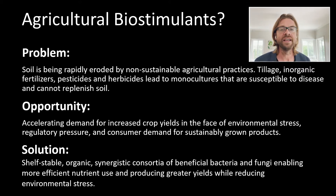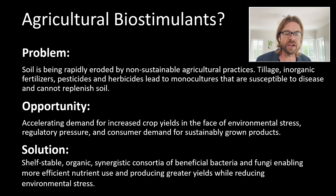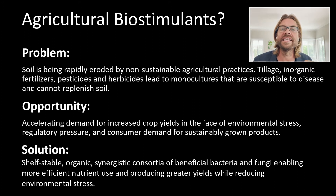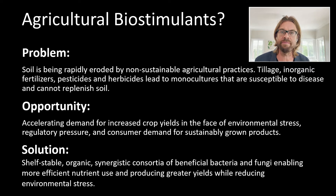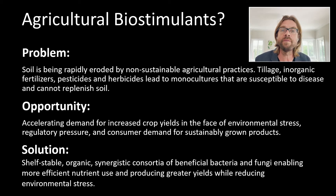There's a huge opportunity in the agricultural biotech space to have increased crop yields which support soils at the same time. We want to be able to protect cropping systems against drought, heat stress, and new pests that will predominantly occur due to shifting climate ranges. The solution is shelf-stable, organic, synergistic consortia of bacteria and fungi that can enable more efficient nutrient use in the soil while enabling stabilisation of that soil matrix, increasing yield, and capturing carbon.